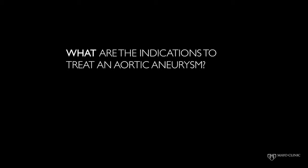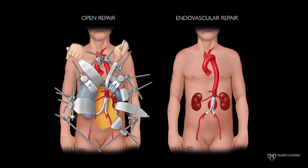What are the indications to treat an aortic aneurysm? When we consider an operation to treat an aneurysm, we always balance the risk of rupture versus the risk of the operation. Most often we consider repair when the aneurysm is larger than 5.5 centimeters in men or 5 centimeters in women, but other important factors are the rate of growth and the shape of the aneurysm. When treatment is indicated, the options are open surgery or endovascular repair with stents.